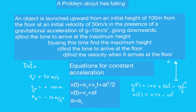We did a problem in class — we repeat the problem. You launch an object from a height of 100 meters. You choose the positive y-axis going upward, and you launch the object upward with an initial velocity v₀ equal to 50 meters per second. The object is subject to a gravitational acceleration pulling it downward.